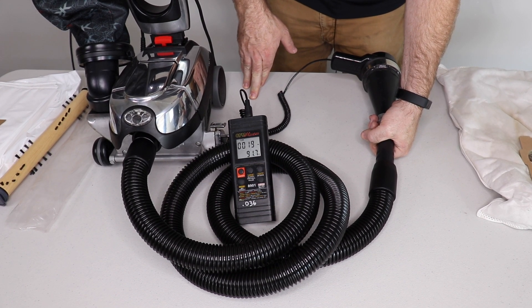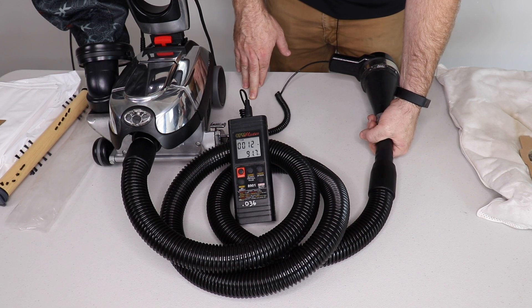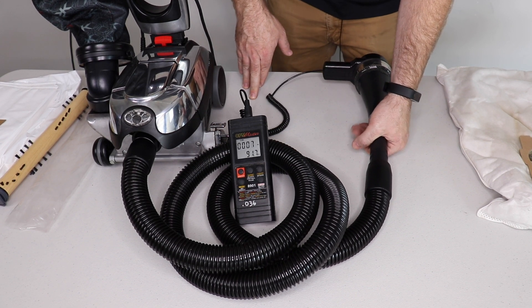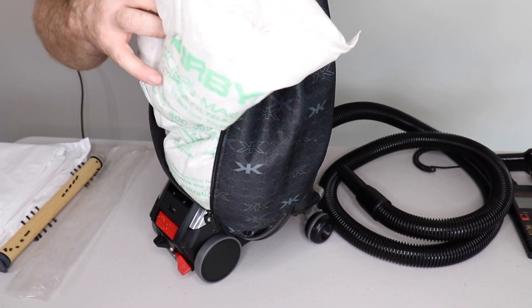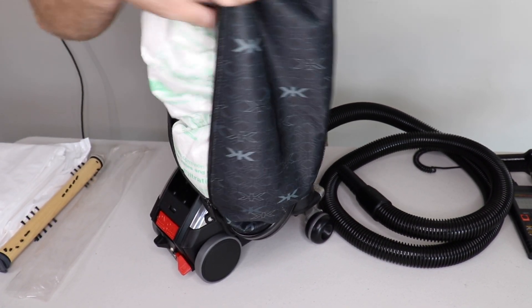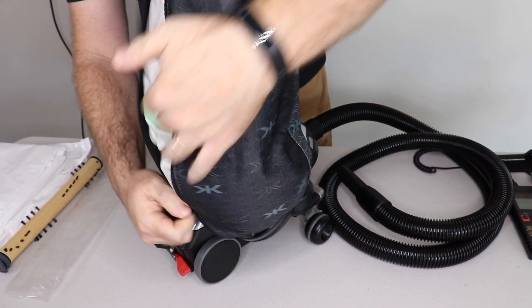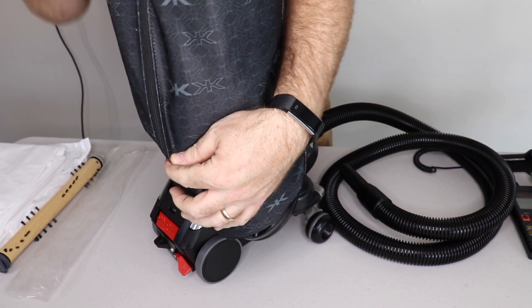So about 120 CFM on average with a brand new bag. Now let's go ahead and install the bag that's half full of dirt. Okay. Now I have installed the dirty bag. It's half full of dirt. And we're going to test its CFM to see if there's a drop at all.